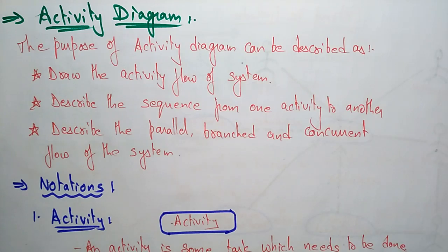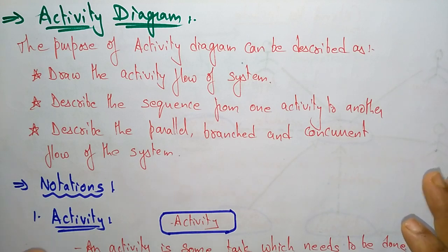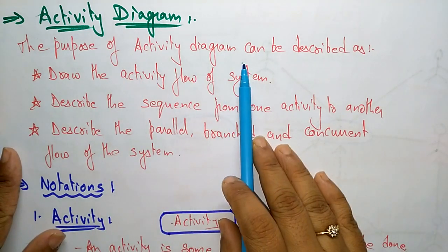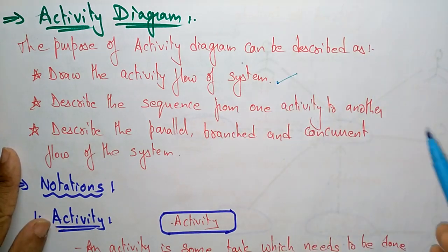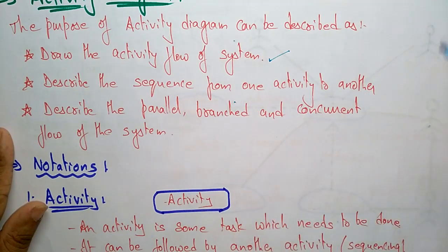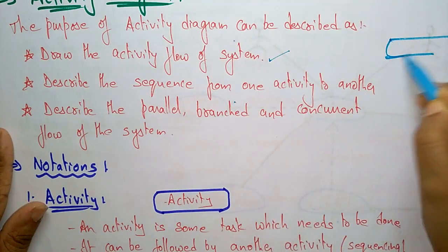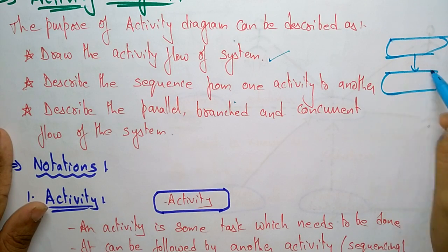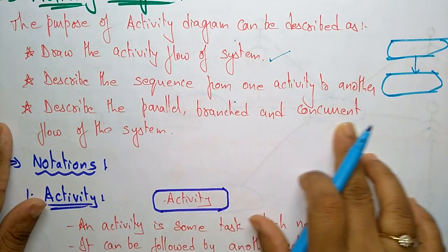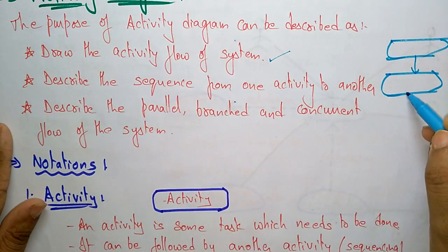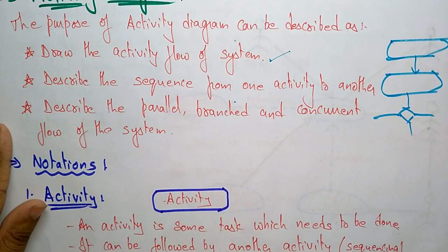Let us continue with the basic behavioral modeling. In the previous video I explained about use case diagrams and the relationships. Now coming to the activity diagram, which is also a behavioral modeling. The purpose of an activity diagram is to draw the activity flow of a system — it describes the sequence from one activity to another activity and describes a parallel, branched, and concurrent flow of the system.